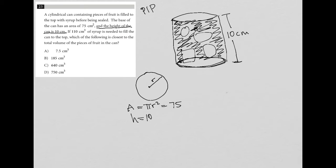If 110 cubic centimeters of syrup is needed to fill the can to the top, which of the following is closest to the total volume of the pieces of fruit in the can?